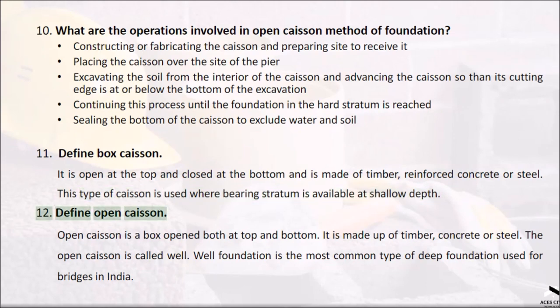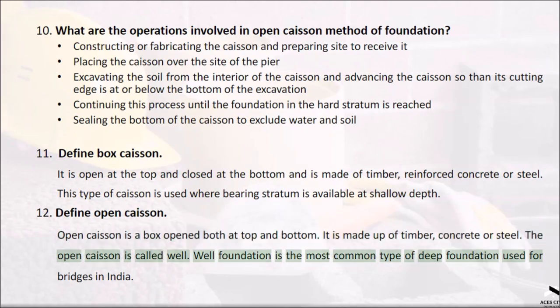Question 12: Define open caisson. Open caisson is a box opened both at top and bottom. It is made up of timber, concrete, or steel. An open caisson is also called a well. Well foundation is the most common type of deep foundation used for bridges in India.